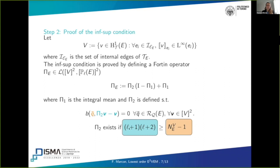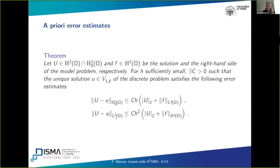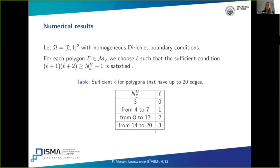This is the end of the sketch of this proof, but I want to underline the linking between these hypotheses and the dimension of the space involved in this relation. Then, we derived the a priori error estimates in H1 norm and in L2 norm, which are the standard ones that we expected. And we proved numerically these a priori error estimates.